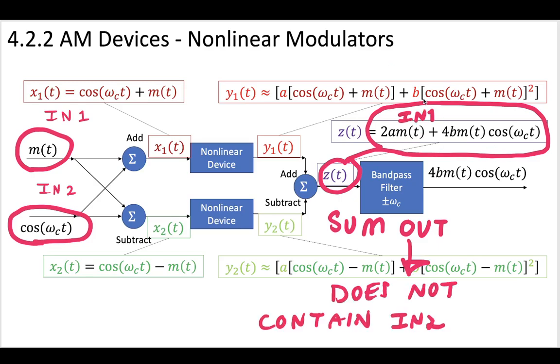Now, if we look at this, we can see that our sum out does not contain any term that has a cosine omega c by itself.